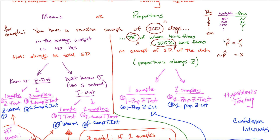The symbol for the sample proportion is p-hat, and the relationship is: p-hat equals x over n, and therefore x equals n times p-hat. If given x and n, calculate p-hat. If given p-hat and n, calculate x. P-hat is used for the center, and x is what you enter into your calculator.